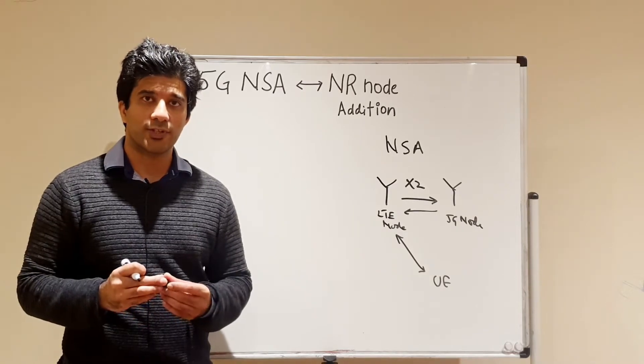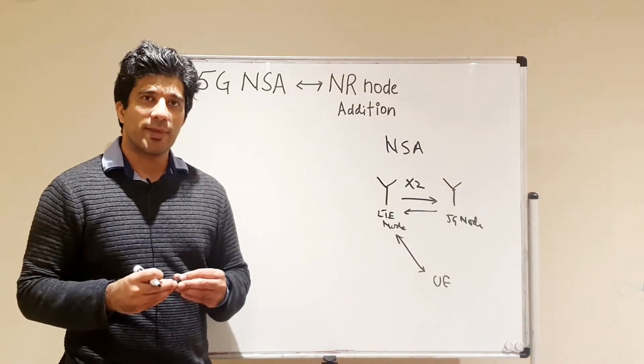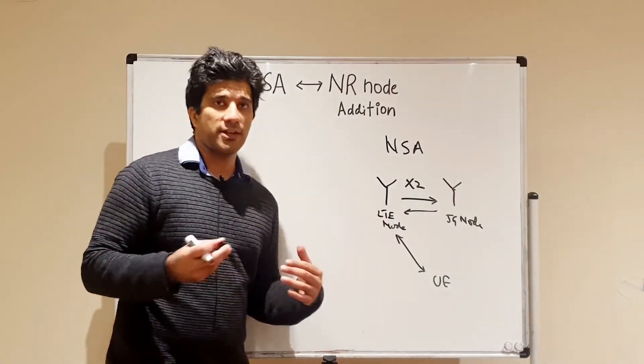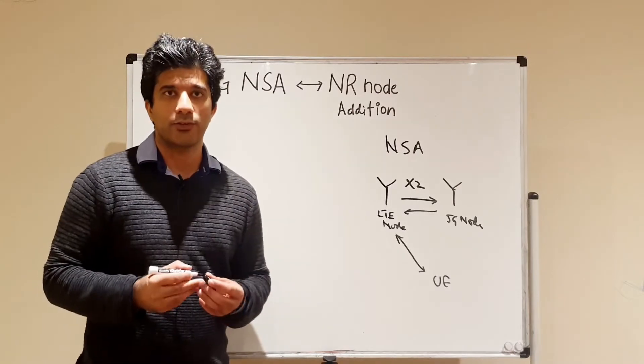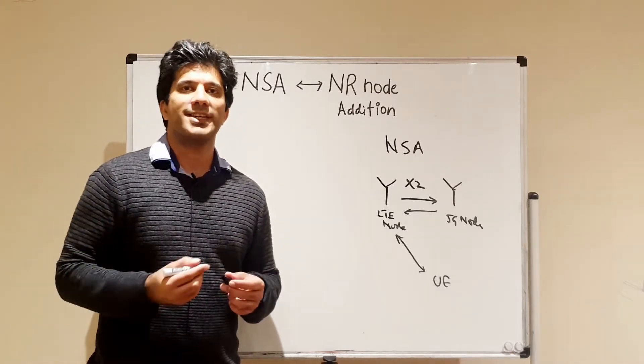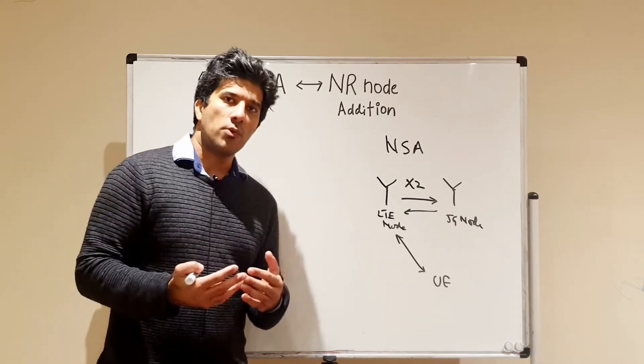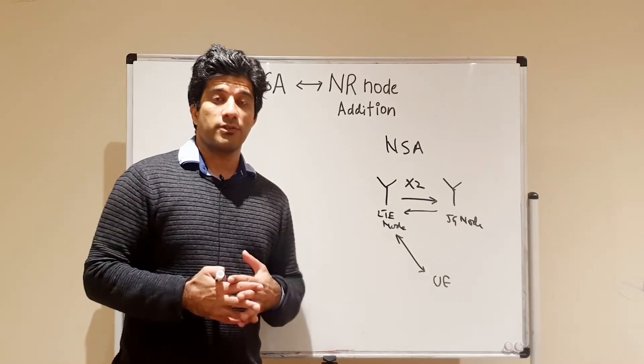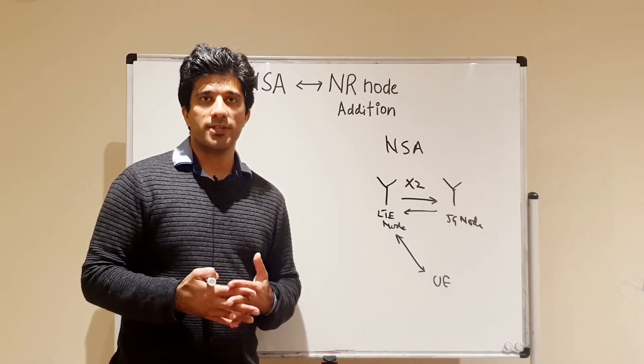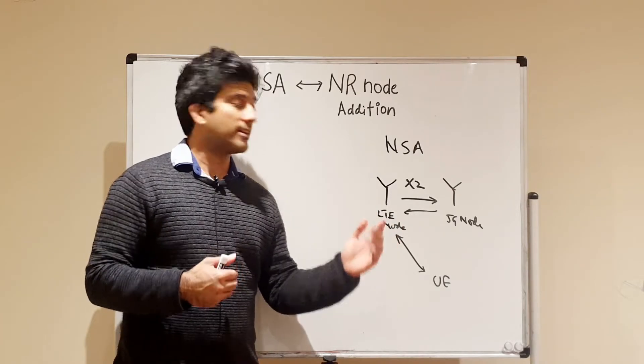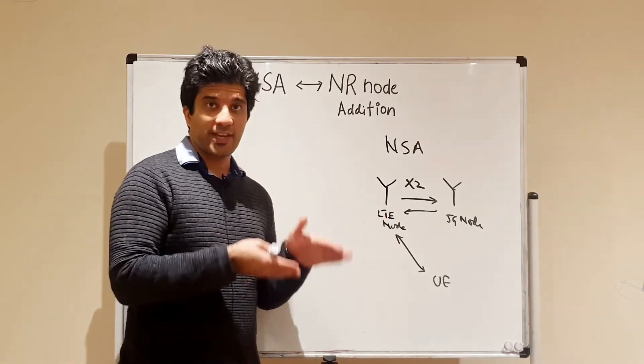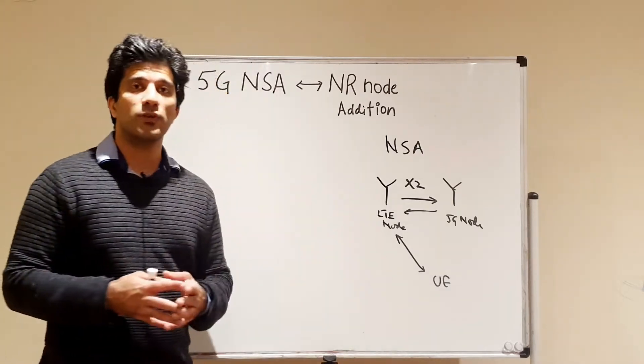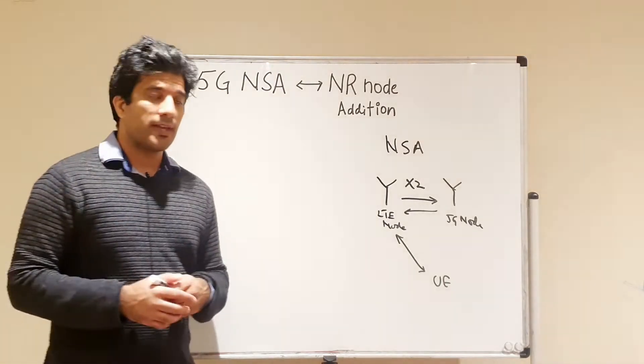But today we want to discuss how the UE basically sets up that 5G leg. In the initial phase, the UE sets up the initial context. For example, you switch on the UE or you move a UE into an LTE cell. The UE will set up an RRC connection request to the LTE cell using a simple attach request. The UE and the LTE node will exchange the messages and an LTE node connection will be set up.